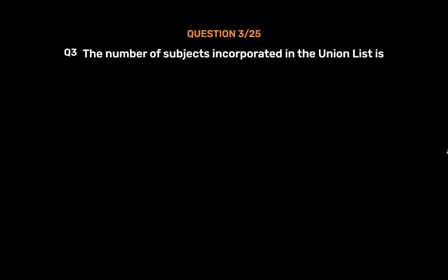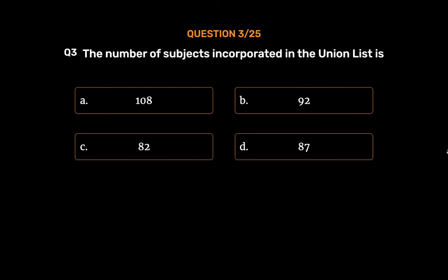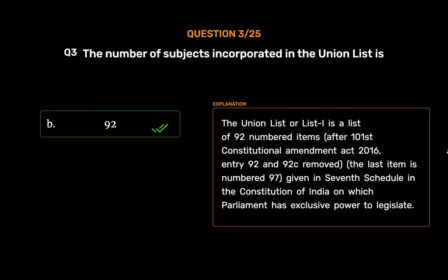Question No. 3: The number of subjects incorporated in the Union List is — Option A: 108, Option B: 92, Option C: 82, Option D: 87. The correct answer is Option B, 92. The Union List or List I is a list of 92 numbered items. After the 101st Constitutional Amendment Act 2016, Entry 92 and 92C were removed; the last item is numbered 97, given in the 7th Schedule of the Constitution of India, on which Parliament has exclusive power to legislate.